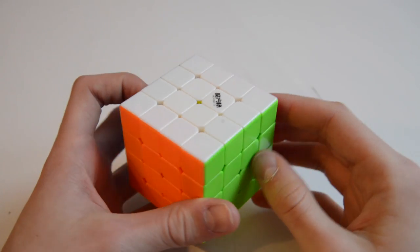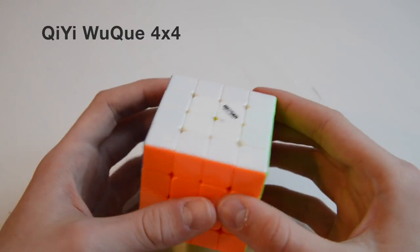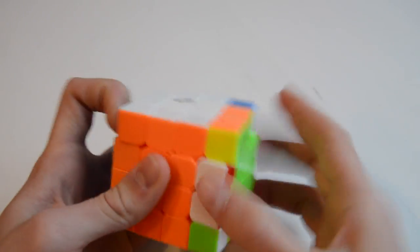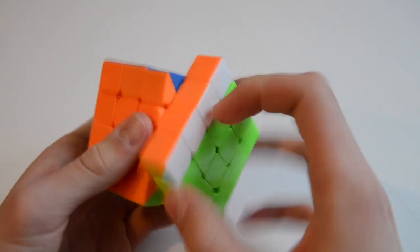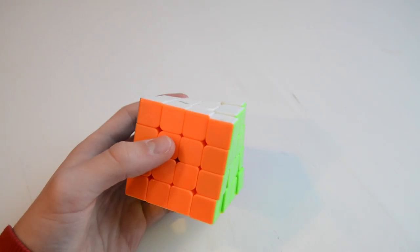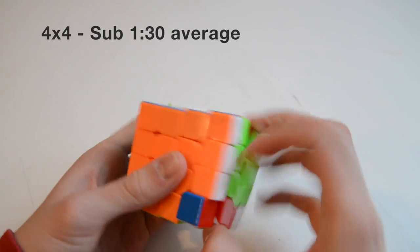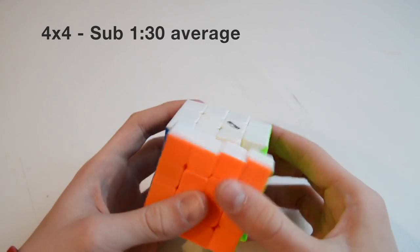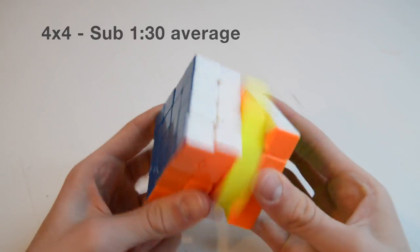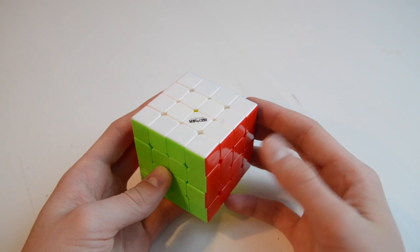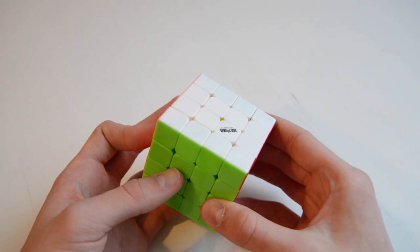For 4x4, I'll be using the Wuque Valk. I don't know how to say it, but basically it's the best 4x4 on the market right now. My goal is to get sub-1:30, and for single maybe sub-1:20. We'll see how it goes.